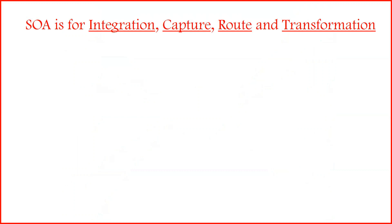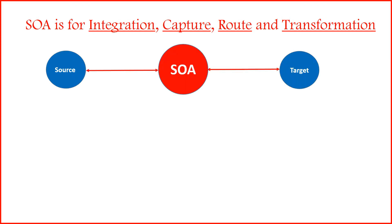SOA performs integration, capture, routing, and transformation. Routing means routing messages from one application to another after capturing. Transformation is also key — for example, your source could be a Java application and the target a .NET application. Just like a Japanese speaker and a Chinese speaker need a translator in between, your Java application talking to a .NET application needs transformation so each can understand the other's messages. That is the work of SOA.